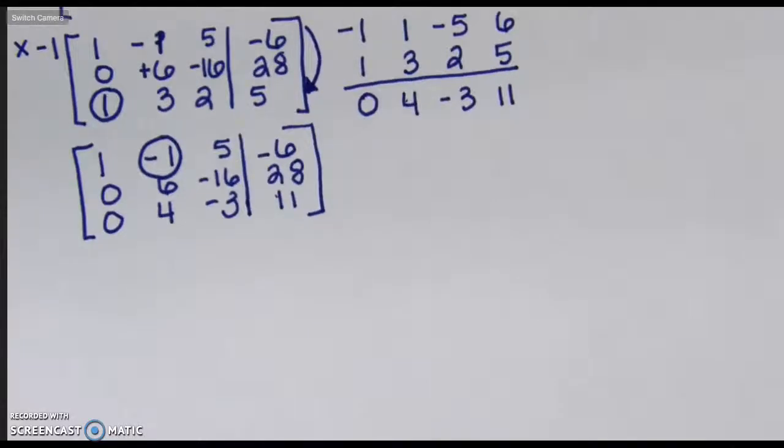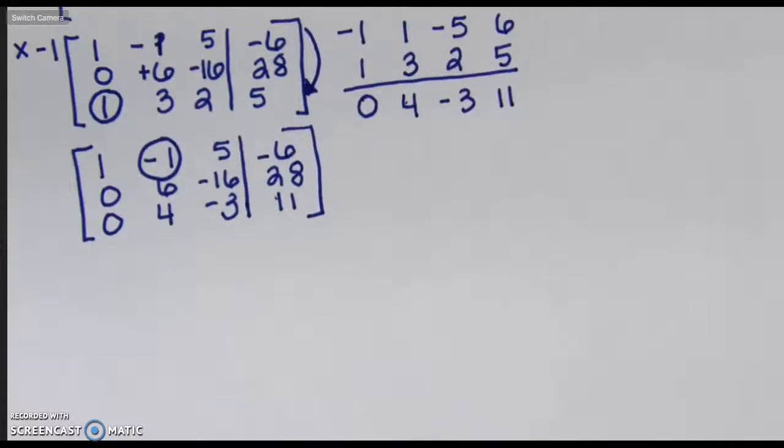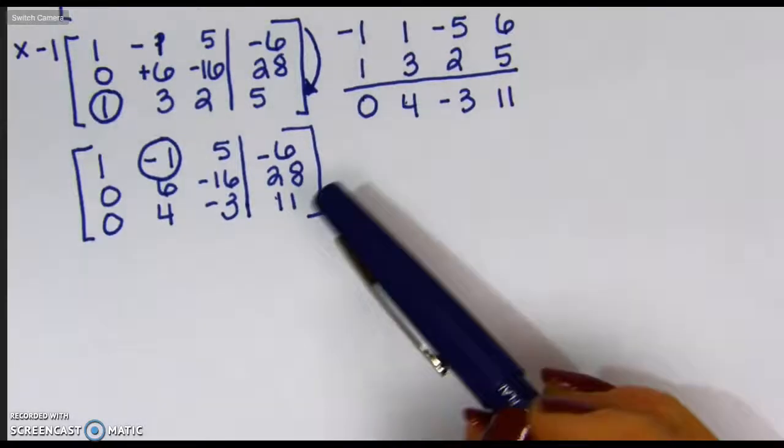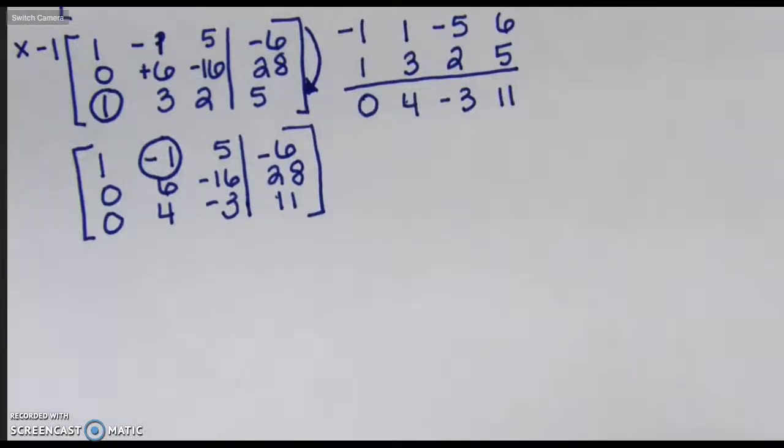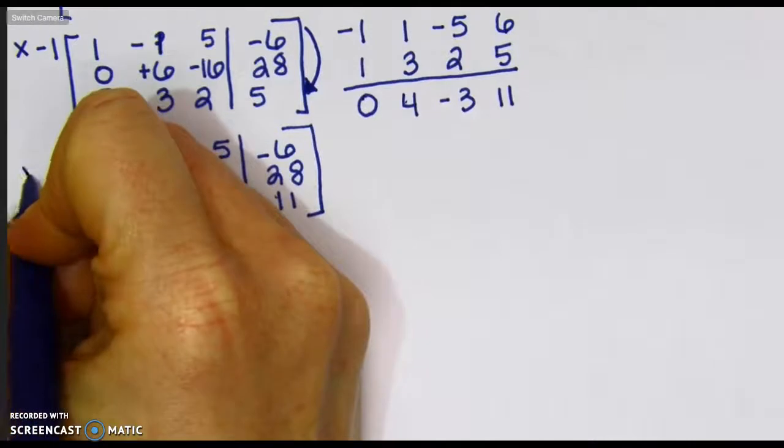So to obtain that negative 1 into a 0 position, I either need to use my second or my third row in order to find a least common multiple between the two. So I'm going to use the second row. I'm going to build to 6, so I'm just going to multiply this top row by positive 6.